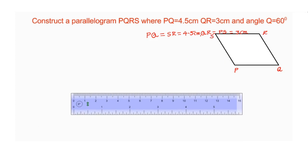First, we have to draw line segment PQ. PQ is equal to 4.5 centimeters. Draw line segment of 4.5 centimeters and name it as PQ.